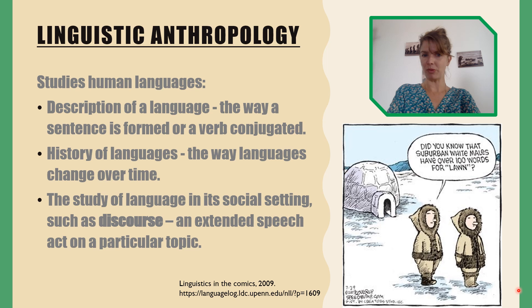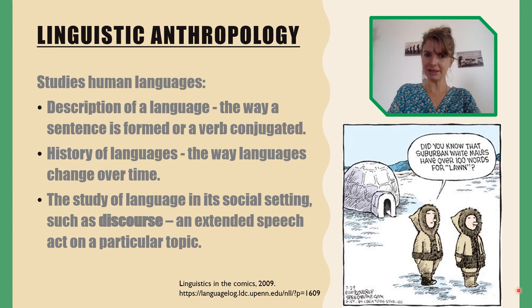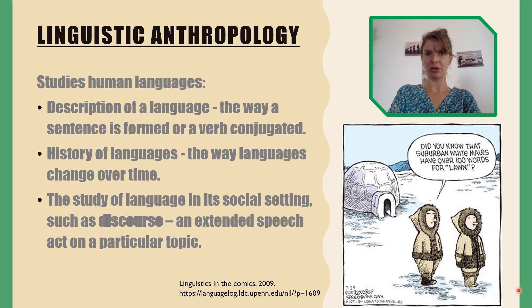In the cartoon, one person says to the other, 'Did you know that suburban white males have over 100 words for lawn?' It's funny because there is no lawn or grass in their environment — only snow. And Inuit people are famous for having more than 50 words to describe snow. This just illustrates that language is very much connected to the environment and cultural context of a place.